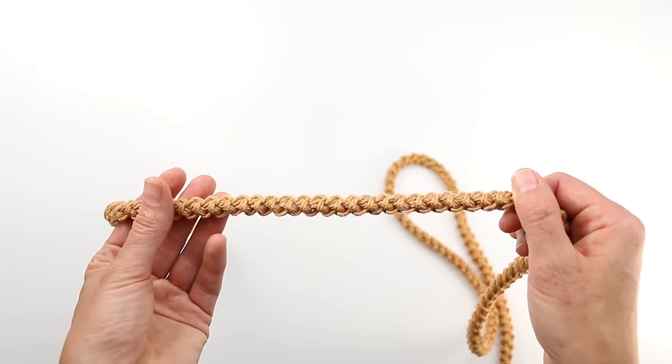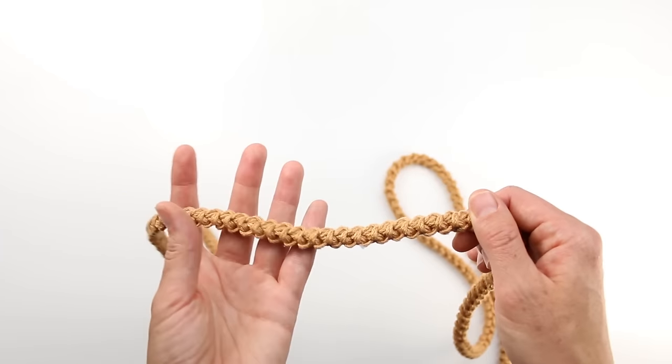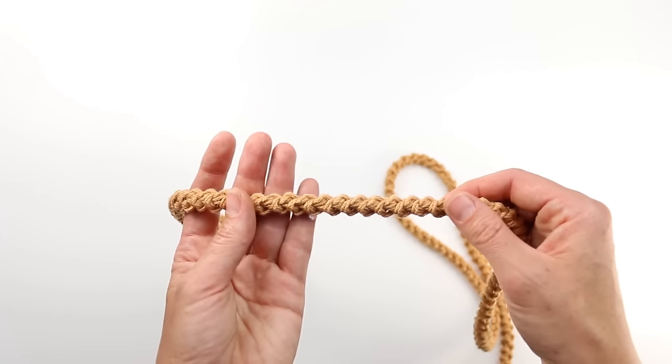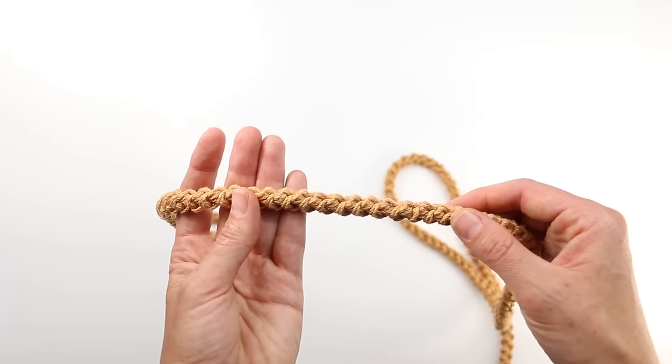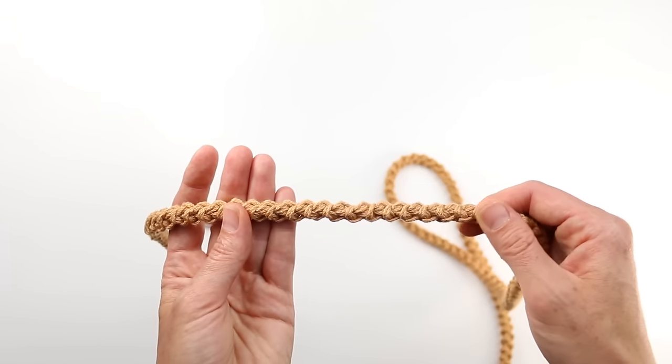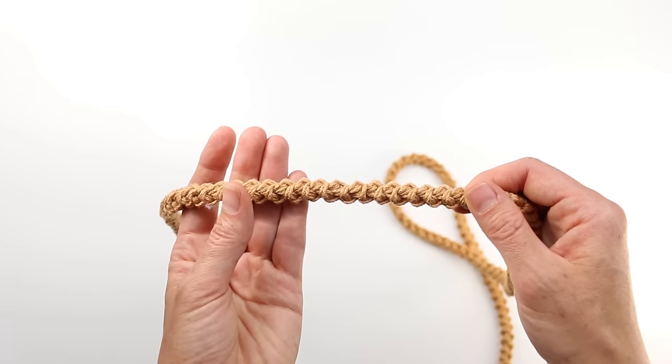Hey there, this is Jess from Make and Do Crew and in this quick video tutorial we're going to learn how to crochet a Romanian cord. This is a nice strong and stable cord that you can use as a purse strap, a belt, or any other time you need an easy cord to make for a crochet project.